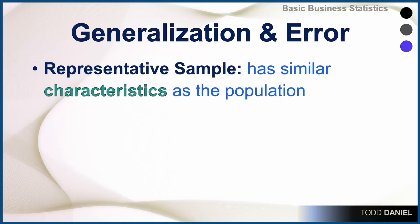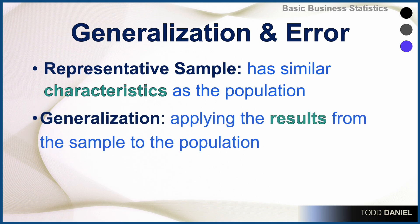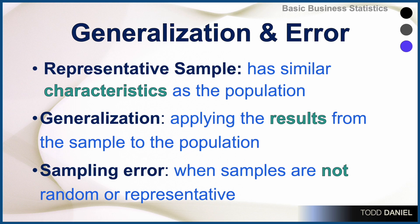Here are some other definitions. A representative sample has similar characteristics as the population; therefore, what we learn from that sample will apply in general. To generalize is to apply the results from the sample to the population. And sampling error occurs when samples are not random or representative.